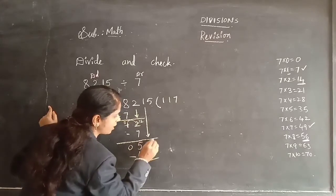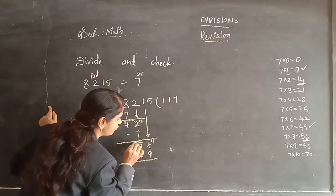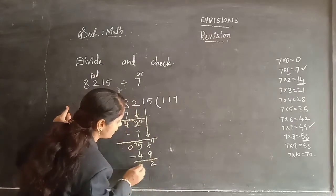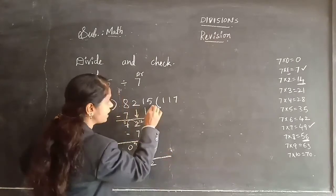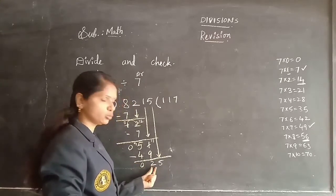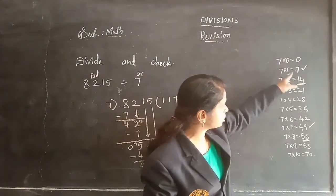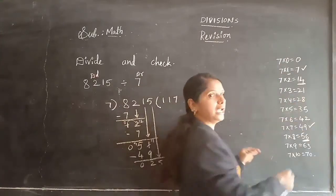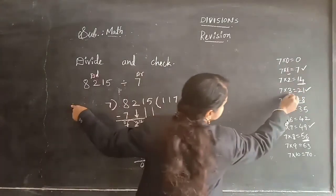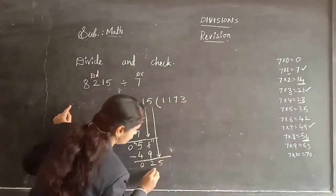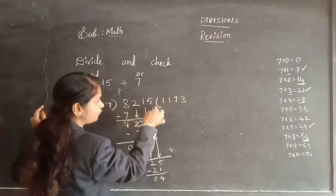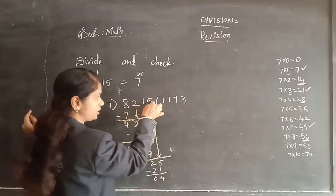51 minus 49: 1 minus 9 is not possible, so borrow — it becomes 11, and 4 becomes 4. 11 minus 9 = 2, and 4 minus 4 = 0. Now bring down the last digit 5, making 25. Is 25 in the 7 table? No — the bigger is 28, so take the one before: 7×3=21. So 5 minus 1 = 4 and 2 minus 2 = 0. We have completed the digits in the dividend number, so we stop.